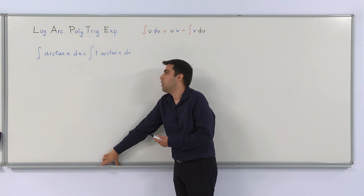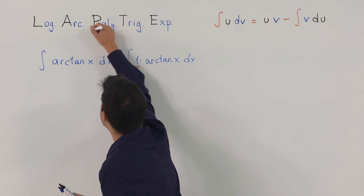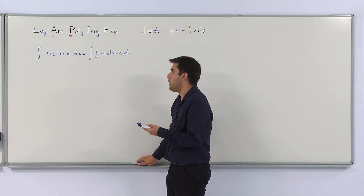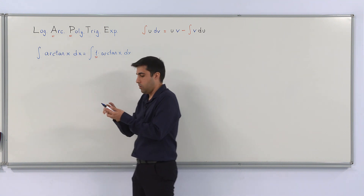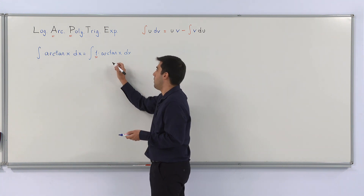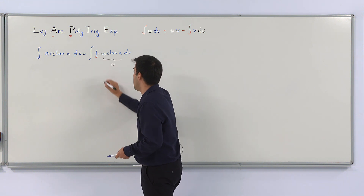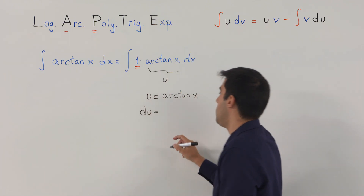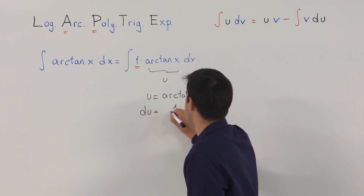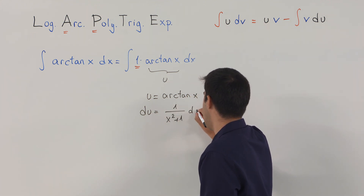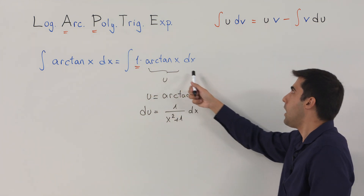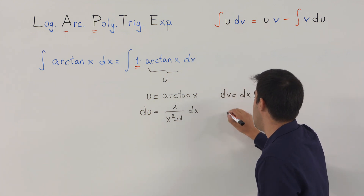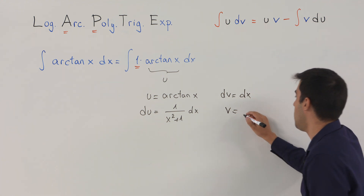Now we have a product of a polynomial 1 and the arctangent x, which is an inverse trigonometric function. That means u should be the inverse trigonometric function, in this case arctangent(x). So if u is arctangent(x), then du equals 1 over (x squared plus 1) dx. What's left, which is 1 dx, is our dv. So dv is dx, meaning v equals x.